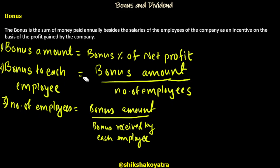Alright, so Bonus and Dividend — let's start from the definition. Bonus is the sum of money paid annually beside the salaries of the employees of the company as an incentive, on the basis of the profit gained by the company.